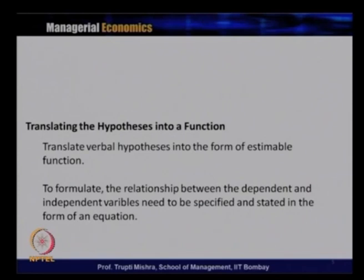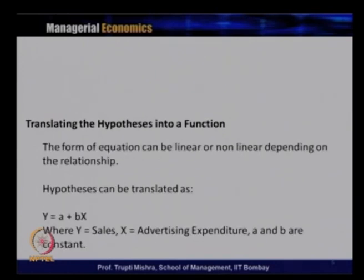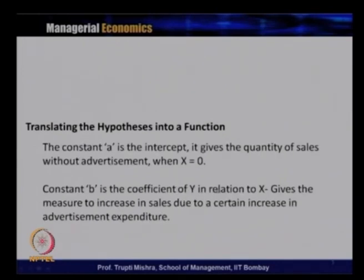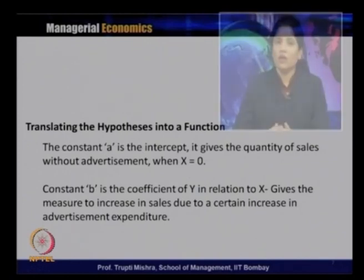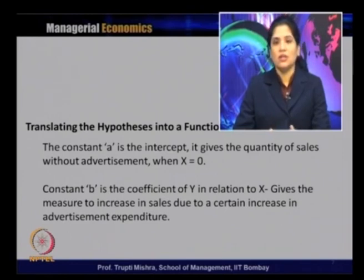After translating the hypothesis into the function, the relationship between the dependent and independent variable needs to be specified and stated in the form of an equation. Here, in the equation, a is the intercept — it gives the quantity of sales without advertisement when x = 0 — and b is the coefficient of x in relation to y, giving the measure of increase in sales due to a certain increase in advertisement expenditure.